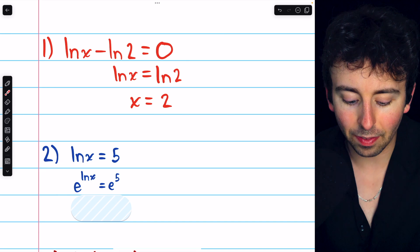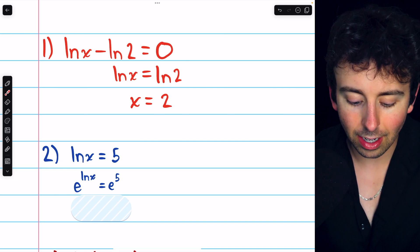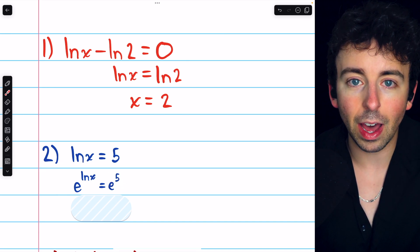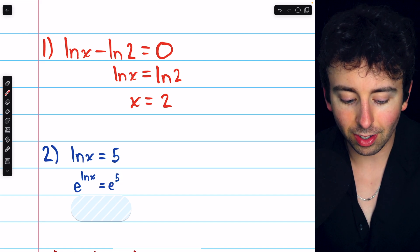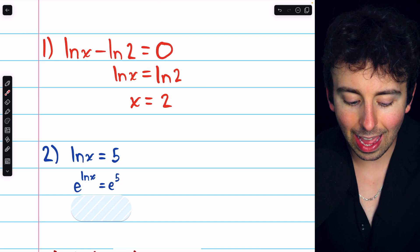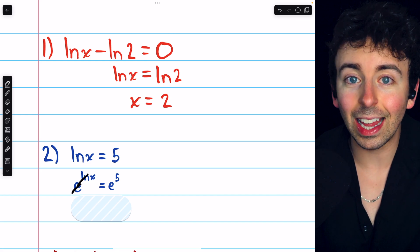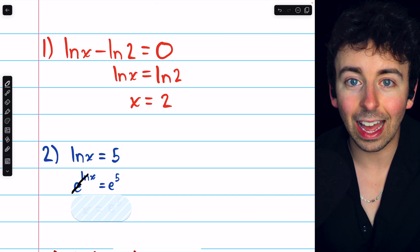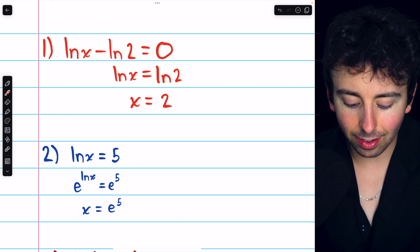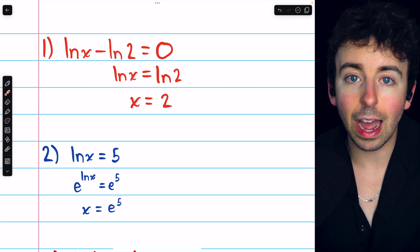We exponentiate the left side, so we have e to the lnx, and we exponentiate the right side, so we have e to the five. On the right, that's just going to stay e to the five, but on the left, e and ln cancel out. e to the lnx is just x, and so we have x equals e to the power of five.